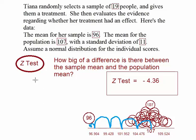So let's come back to our original question. How big of a difference is there between the sample mean and the population mean? That's what the z-test is designed to answer for us. We see that our answer is negative 4.36. We got that by plugging and chugging. What that means conceptually is that our sample mean is 1, 2, 3, 4.36 standard errors below the mean within the distribution of sample means that we would expect.